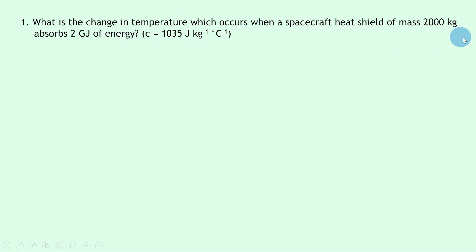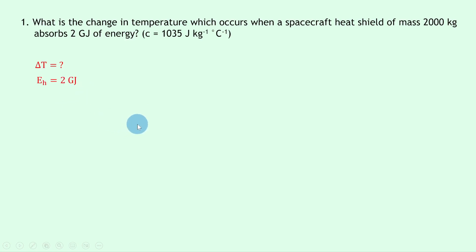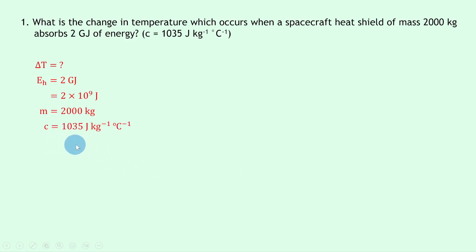Question 1 says: what is the change in temperature which occurs when a spacecraft heat shield of mass 2000 kilograms absorbs two gigajoules of energy, and we're told the specific heat capacity c is 1035 joules per kilogram per degree Celsius. Because we're talking about change in temperature, we're going to use the equation for specific heat capacity. Writing down what we know: we're trying to find the change in temperature ΔT, and the heat energy E_H is two gigajoules, which we need to convert to joules — that's 2×10⁹ joules.